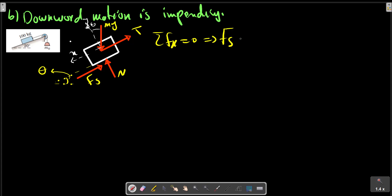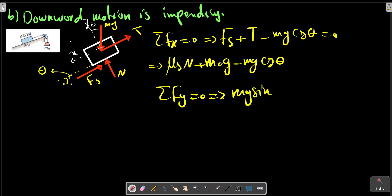Fs plus T minus mg sin theta equals zero. Fs, which is mu_s*N, plus m0*g minus mg sin theta equals zero. Sigma Fy equals zero: N minus mg cos theta equals zero. Let me make a correction in this. And we get mg sin theta.